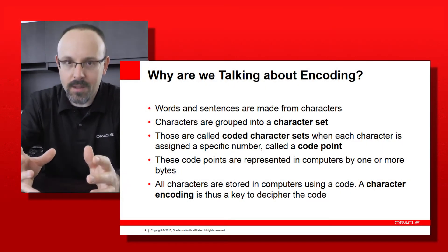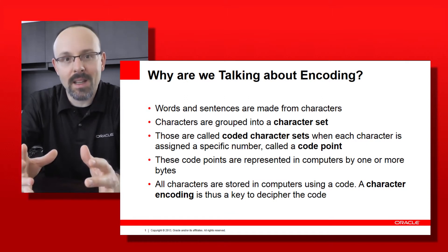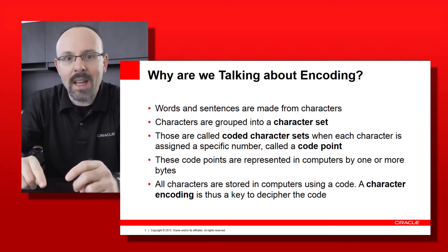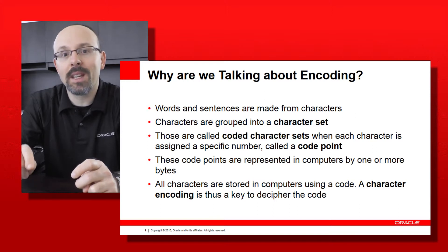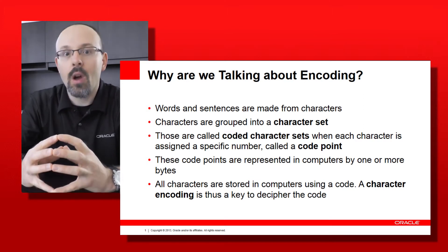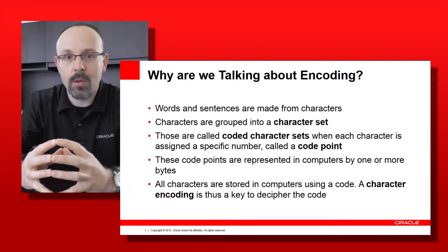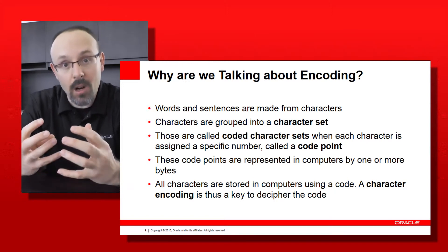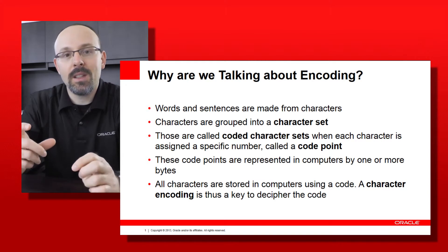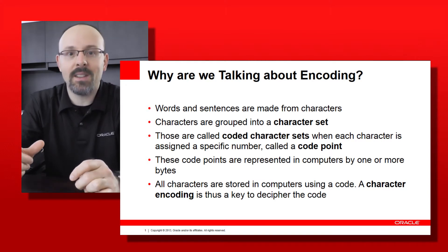First, let's think a bit about the concept of character encoding. Basically, every word is made of characters. The set of all possible characters in a specific locale or alphabet is called a character set. We talk about a coded character set when we assign a number to represent each and every character, and this number is called a code point. Inside computers, code points are represented over one or more bytes depending on which encoding we are using.